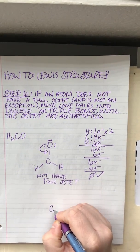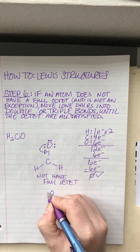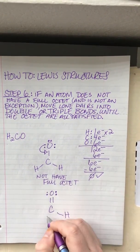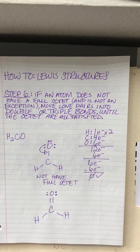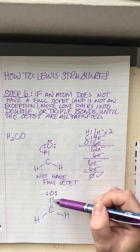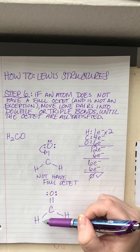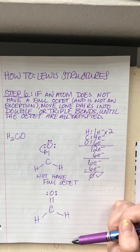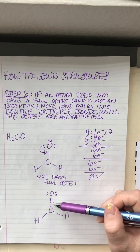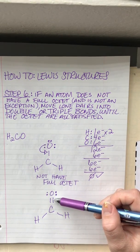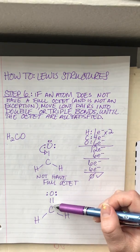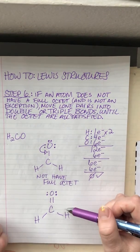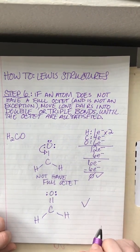When we do that, we get a double bond between carbon and oxygen. We still have two lone pairs on oxygen and our two hydrogens. Now oxygen has two, four, six, eight electrons total around it. What we're doing with the double bond is taking a lone pair and sharing it between these two atoms in a double covalent bond. Now all octets are satisfied, which means our structure is valid.